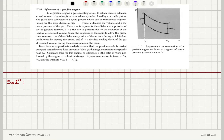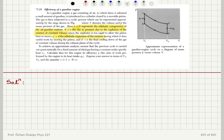A to B represents the adiabatic compression of the air-gasoline mixture. B to C is the rise in pressure due to the explosion of the mixture at constant volume, since the explosion is too rapid to allow the piston time to move. C to D is adiabatic expansion of the mixture, during which it does useful work by moving the piston. And D to A is the final cooling down of the gas at constant volume during the exhaust phase of the cycle.